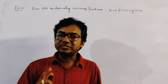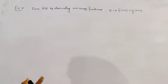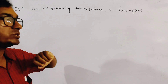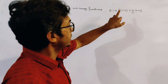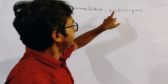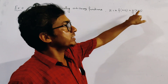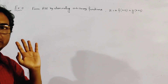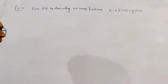This is a class on partial differential equations. Here we discuss the formation of a partial differential equation by eliminating arbitrary functions. Two arbitrary functions are given: f and g. The given relation is z equal to x into f of (x plus y) plus g of (x plus y). We have to eliminate f and g and form a partial differential equation. Here z is dependent and x and y are independent.